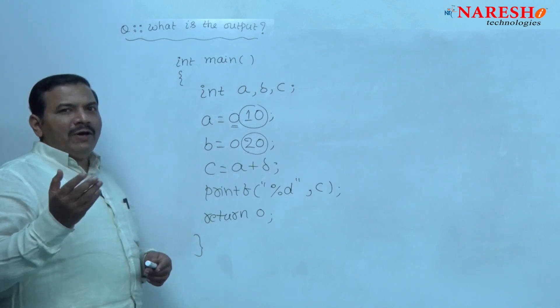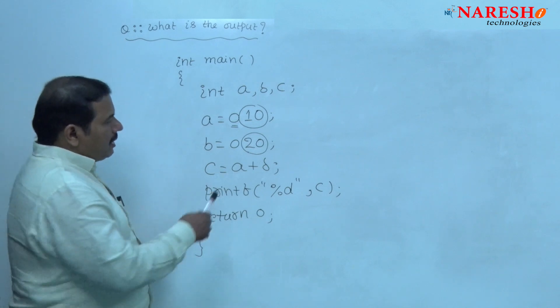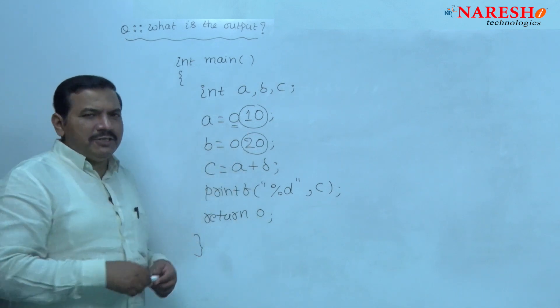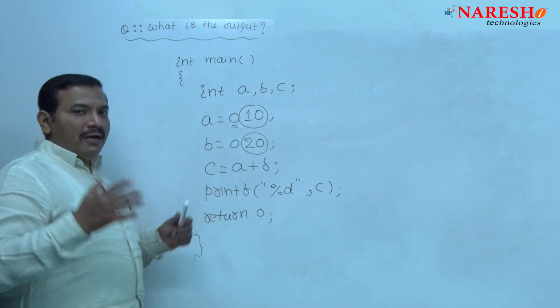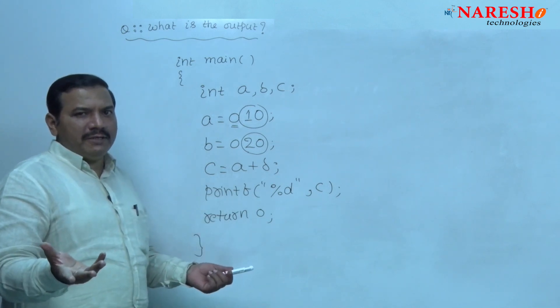The better way of solving this question is convert these two octal integers into decimal integers and then add. That is the final result printed.